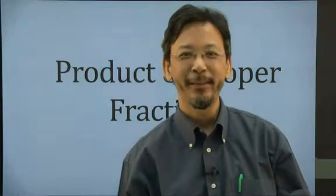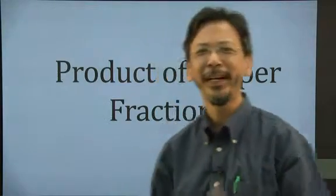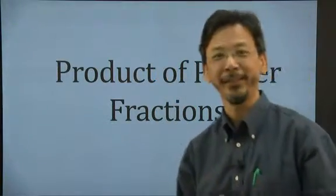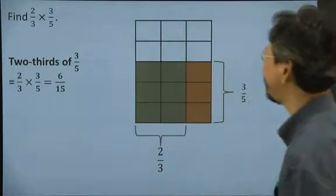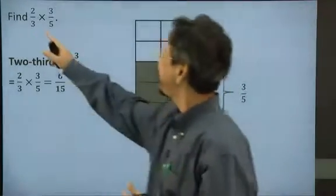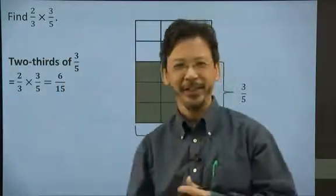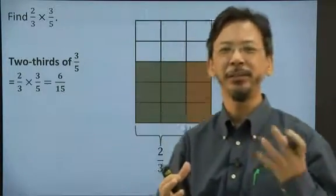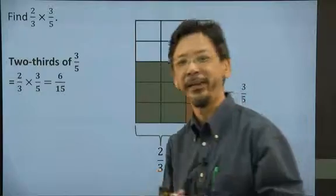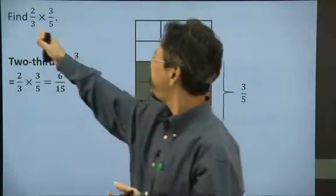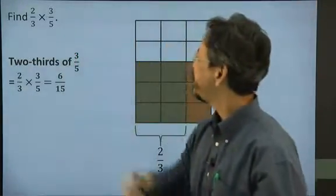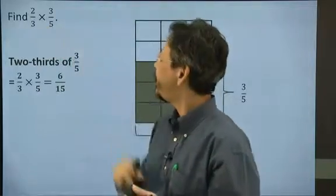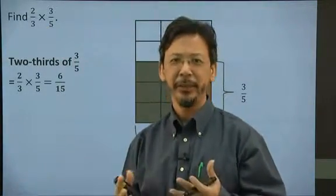We're going to be talking about product of proper fractions. Now we understand what proper fractions are. You would have learned how to define a fraction. How do we make a fraction? Let's take a look at this. Notice that you have two fractions and we're going to take the product. What do you mean by the product? The product is to multiply one fraction with another. So here we have two-thirds multiplied by three-fifths. How do we do that?